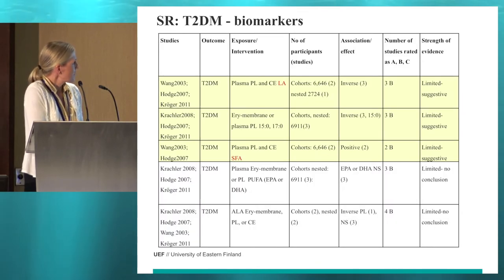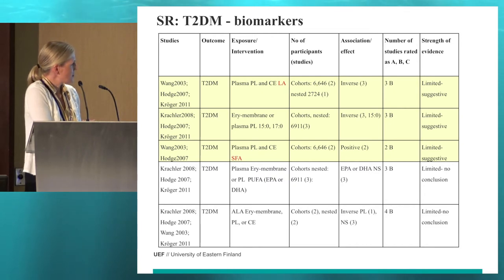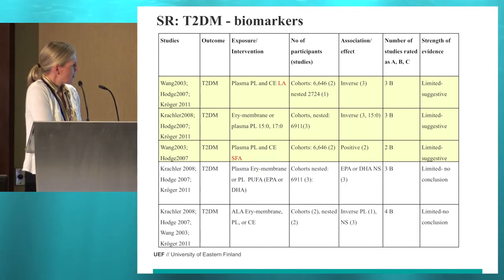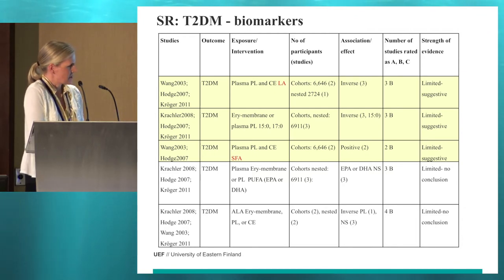Regarding biomarkers, it was shown that in plasma phospholipids and cholesterol esters, linoleic acid had an inverse association with type 2 diabetes — the level of evidence was suggestive — and saturated fatty acids in phospholipids and cholesterol esters had a positive association with type 2 diabetes, with the same strength of evidence.